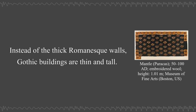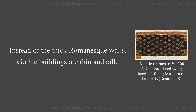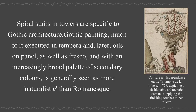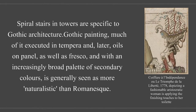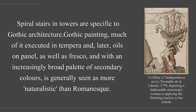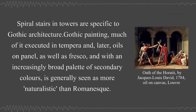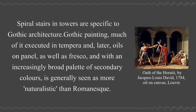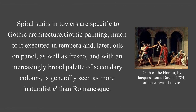Gothic architecture differs from Romanesque through its rib-shaped vaults and the use of ogives. Instead of the thick Romanesque walls, Gothic buildings are thin and tall. Spiral stairs and towers are specific to Gothic architecture. Gothic painting, much of it executed in tempera and later oils on panel, as well as fresco, and with an increasingly broad palette of secondary colors, is generally seen as more naturalistic than Romanesque.